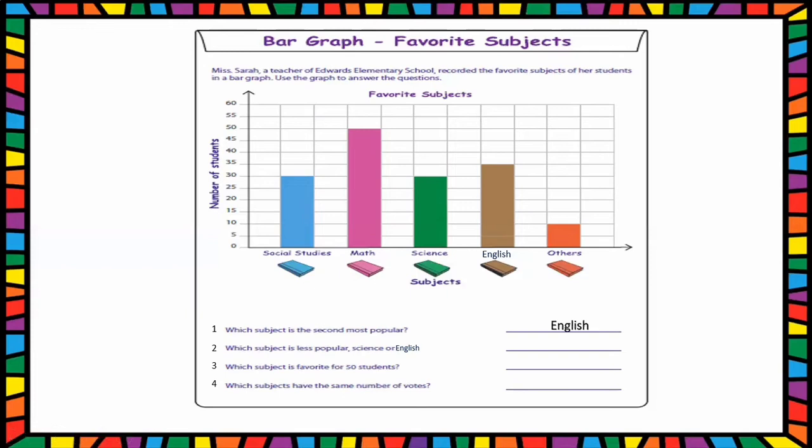Next question: Which subject is less popular, science or English? For science, 30 students favorite only. But for English, 35 students favorite. So which is the less popular comparing science and English? Science is the less popular subject.